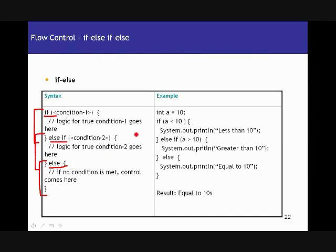In the example, we have an integer A whose value is 10. We check: if A is less than 10, print some statement; else if A is greater than 10, print some other statement; else print some statement. Since the value of A is neither less than 10 nor greater than 10 — it is equal to 10 — it goes into the else block and prints 'equal to 10'.